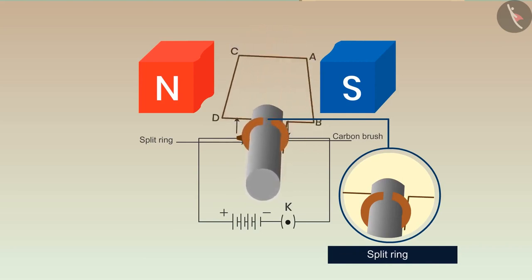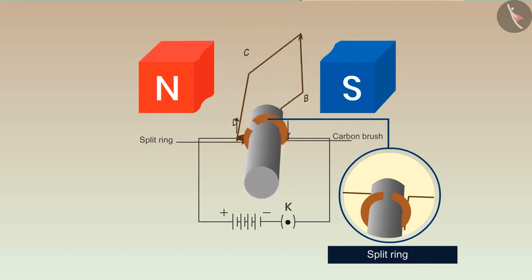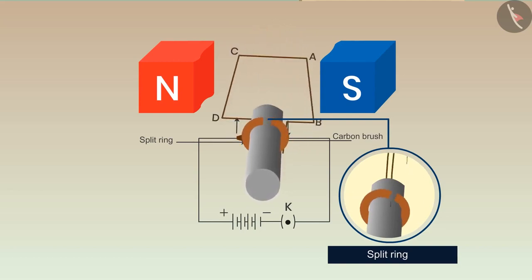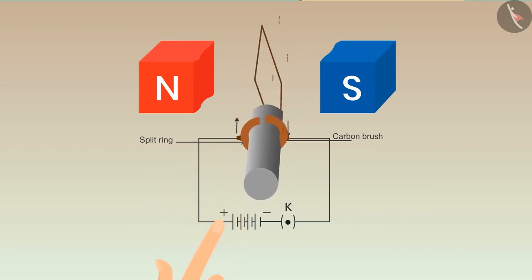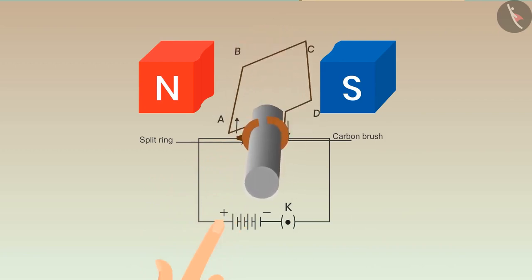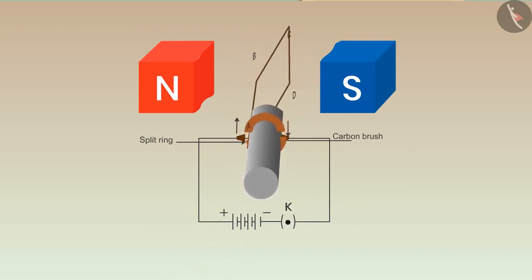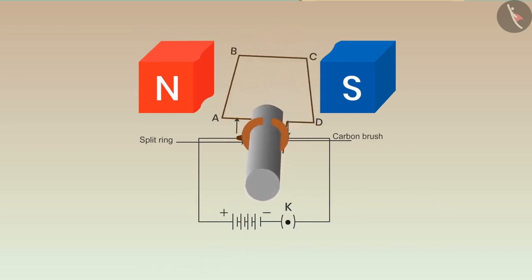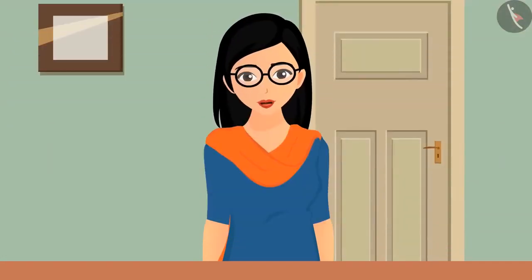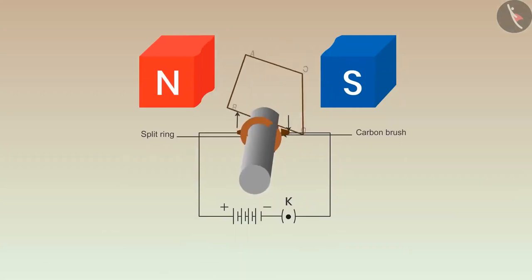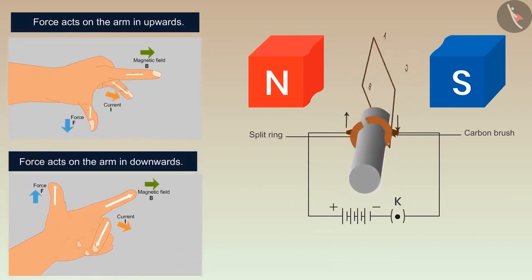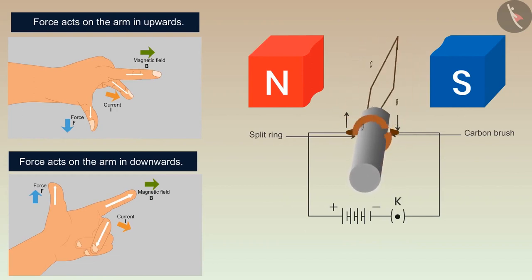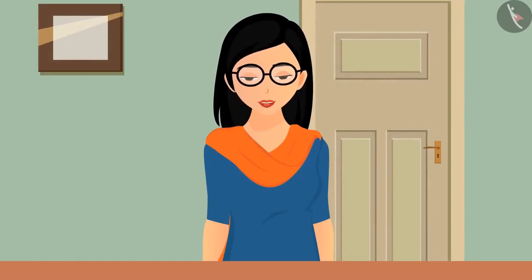A split ring is introduced in the system to keep the rotation in one direction only. A split ring is a special kind of ring which has two halves. The ends of the coil are connected to these halves, which are then connected to the circuit with the help of carbon brushes, helping to keep the flow of electric current in one direction only. The force acting on arms AB and CD will keep the motor rotating in one direction by reversing after each half cycle. When current flows through the circuit, force acts on arm AB downward and on arm CD upward, then after half the cycle the directions reverse, and the cycle repeats.